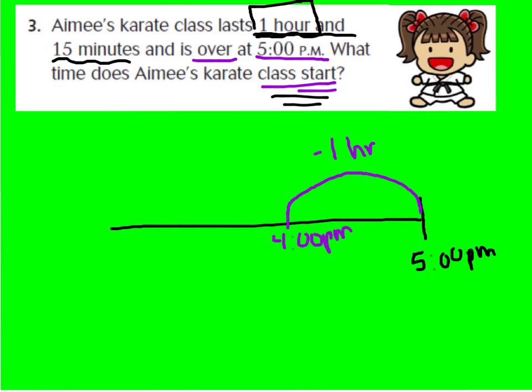So far I've already taken away an hour. But the class lasts an hour and 15 minutes, so now from 4 o'clock I'm going to take away increments of 5 minutes. Let's take away one group of 5 minutes from 4 o'clock. If I'm at 4 o'clock and I go back 5 minutes, I will be at 3:55.